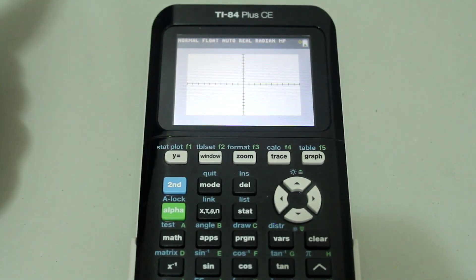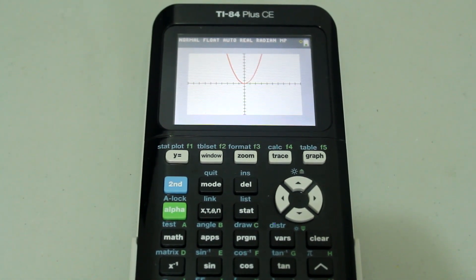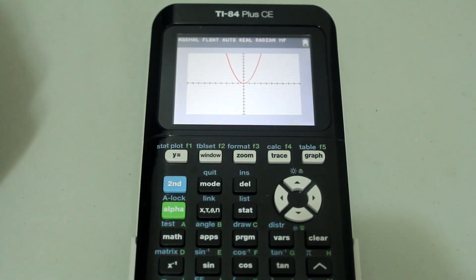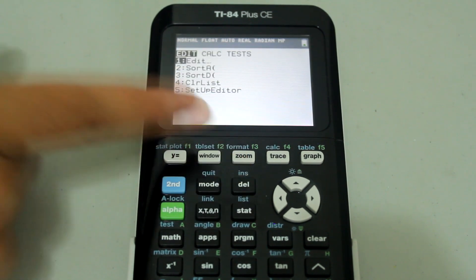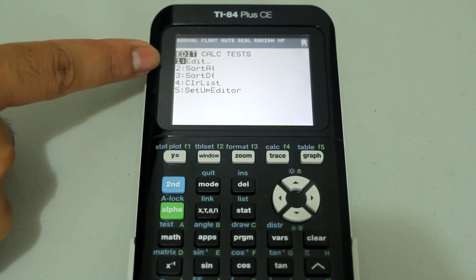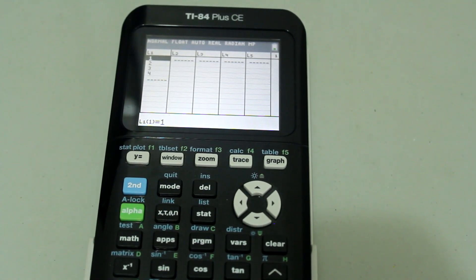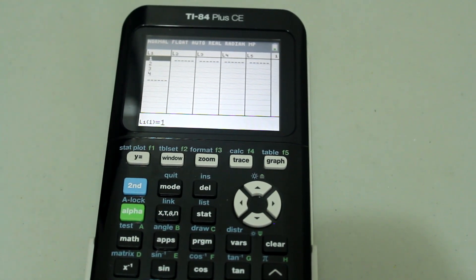Now graph and you see that the graph of x squared appears on the screen. Now press stat and select the edit option. Since the cursor is already on edit, just simply press enter. And that brings up the lists.